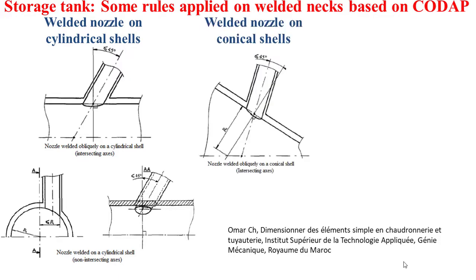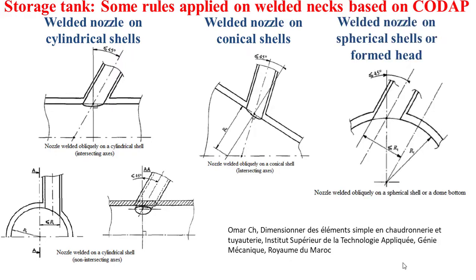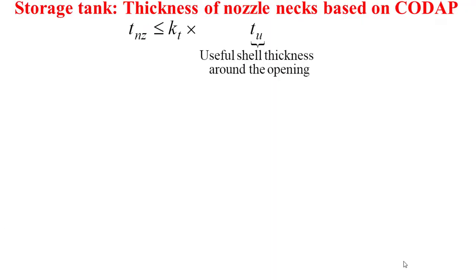When the nozzle neck is welded obliquely to a conical shell, a maximum inclination of 45 degrees and a distance equal to the internal radius of the shell must be respected, as shown in the middle picture. Similarly, when the nozzle neck is welded on a spherical shell or on a formed head, the rule of maximum inclination of 45 degrees and a maximum distance equal to the internal radius must be respected, as depicted in the picture at the right.